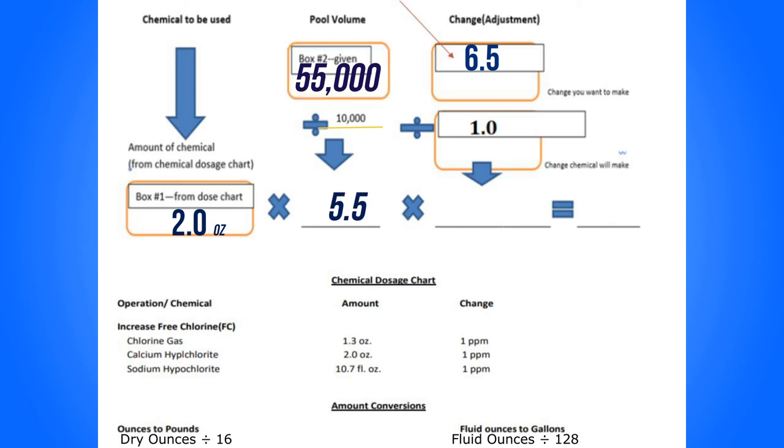Put the answer here, which is 5.5. Now you take your 6.5 divided by 1 because it's already written in the worksheet for you. So 6.5 divided by 1 will give you the answer here of 6.5.